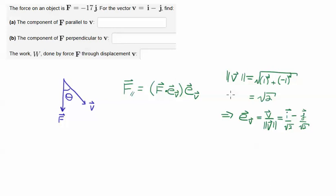To utilize this formula, I'm going to have to compute the following information. So I'll get the length of V here, which is just 1 squared plus minus 1 squared, and that's just the square root of 2. And then the unit vector in the V direction is V divided by the magnitude of V, so it's just going to be I over root 2 minus J over root 2.